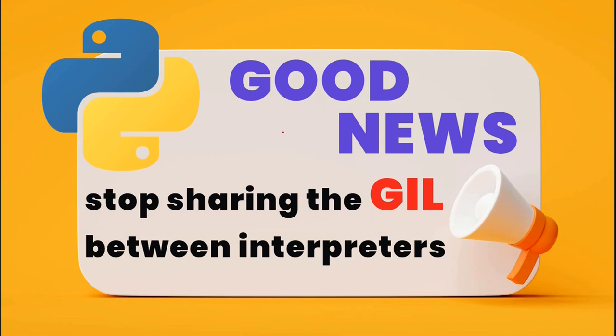Hello guys, welcome to the Master in Python channel. In this video, we talk about the new feature of Python version 3.12, which is Python stopping the sharing of the GIL — Global Interpreter Lock — between interpreters. I will give you an example and compare the results, so if you are interested in Python, stay tuned.